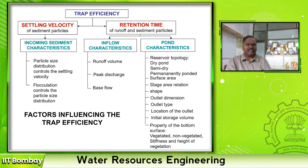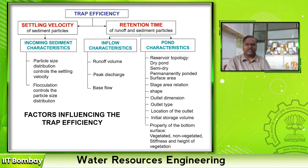Settling velocity is governed by the particle size distribution. The retention time is divided into two important characteristics: inflow characteristics and pond characteristics. Inflow characteristics include runoff volume, peak discharge, and base flow. Pond characteristics — how the reservoir is operated — include reservoir topology (dry pond, semi-dry, or permanently ponded), surface area-storage relation, shape, outlet dimension, outlet type, location of the outlet, initial storage volume, and the property of the bottom surface (vegetated or non-vegetated, and stiffness and height of vegetation).